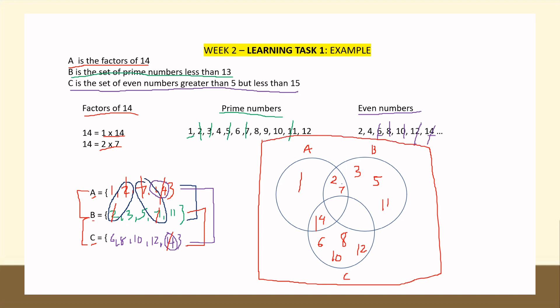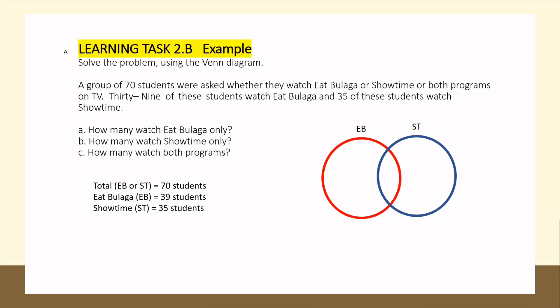This is an example for Learning Task 2, letter B. A group of 70 students were asked whether they watch It's Showtime or Eat Bulaga or both programs on TV. 39 of these students watch Eat Bulaga and 35 watch Showtime. The questions are: how many watch Eat Bulaga only, how many watch Showtime only, and how many watch both programs?